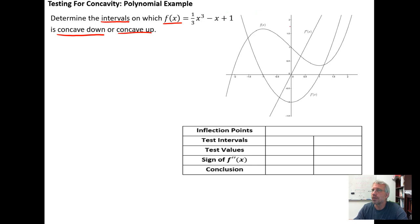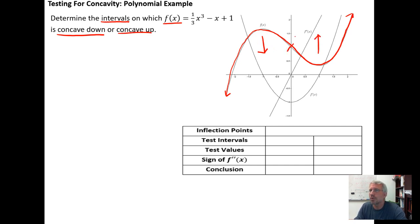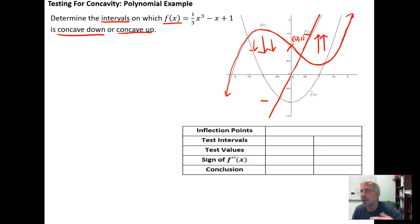f of x is a third-degree polynomial. The graph of f of x is shown here, and I've included the graph of its first and second derivatives. We can see visually that the function is going to be concave down here and concave up here. The inflection point looks like it's located at (0, 1). When the graph is concave down, the second derivative is negative, indicating a decreasing derivative. When the graph is concave up, the second derivative is positive, indicating an increasing derivative.